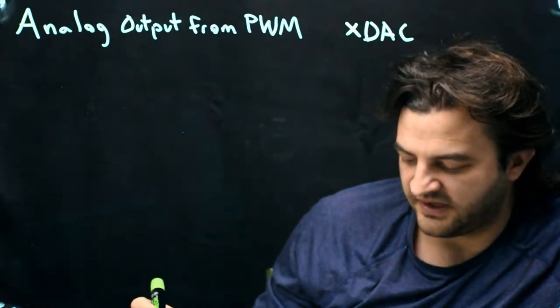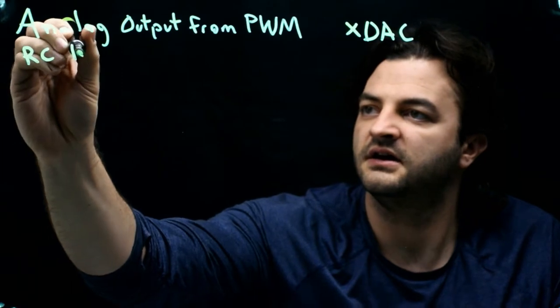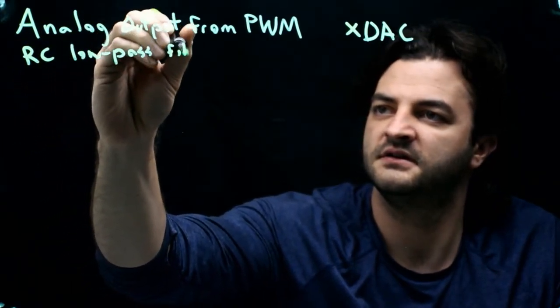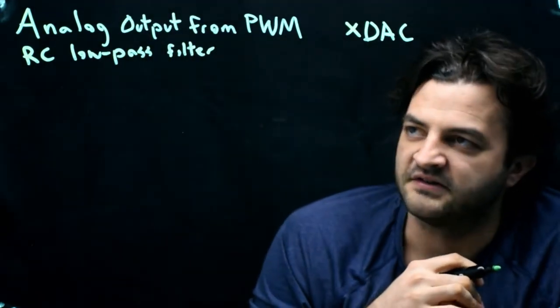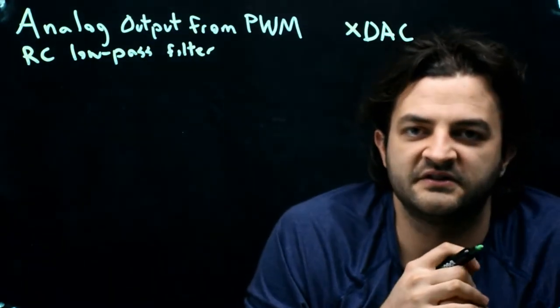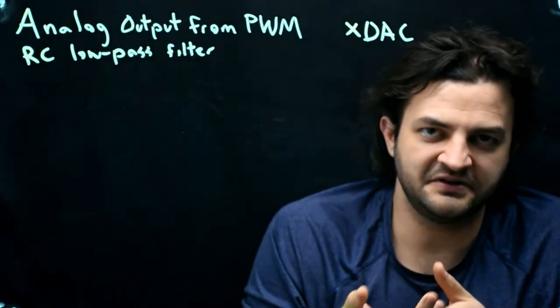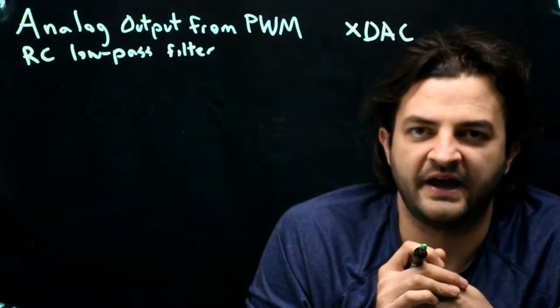So we're going to use a simple RC low-pass filter. There are lots of low-pass filter designs out there. This is probably the least expensive one, because it uses a single resistor and a single capacitor. That means it's not a particularly good low-pass filter, so we'll see some rules of thumb for how to choose that R and C.